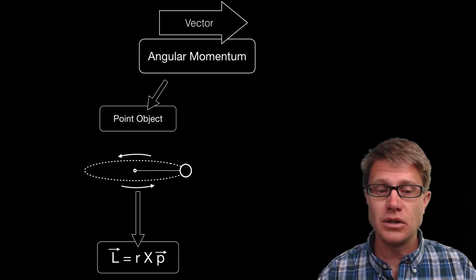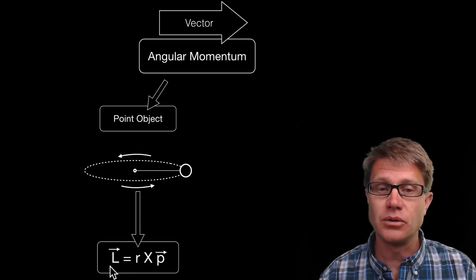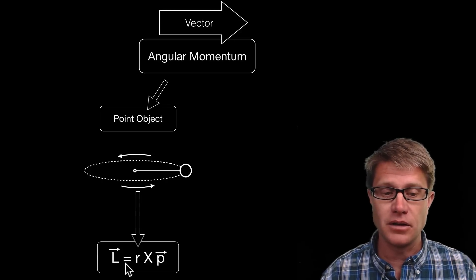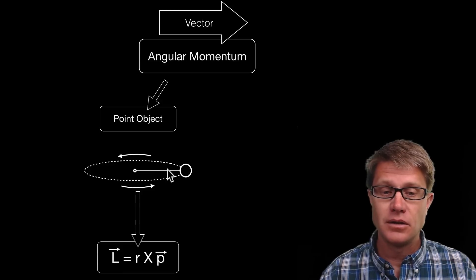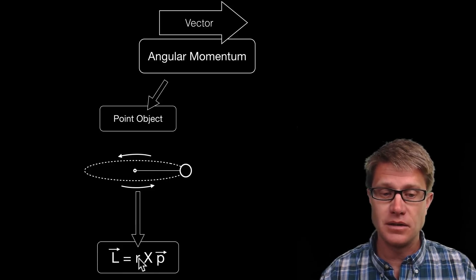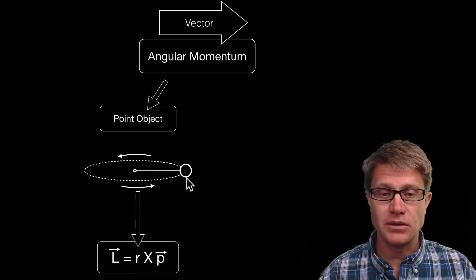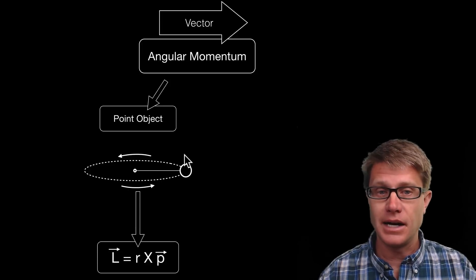The equation is very simple. L, the angular momentum — again it is a vector — is equal to r, the radius from the center to the object, times its linear momentum, which is the mass times the velocity in a line.